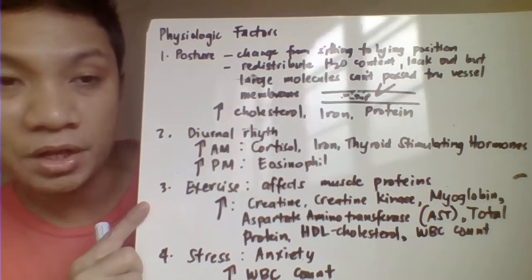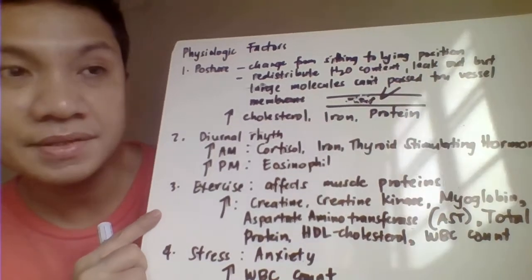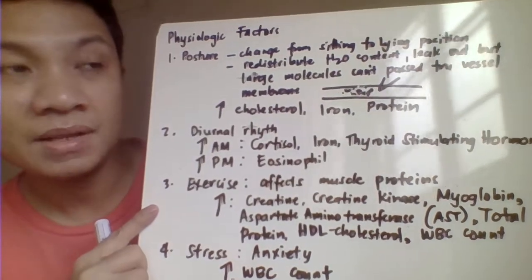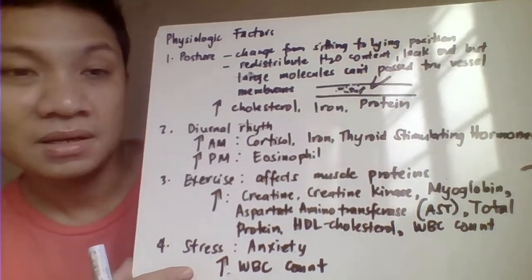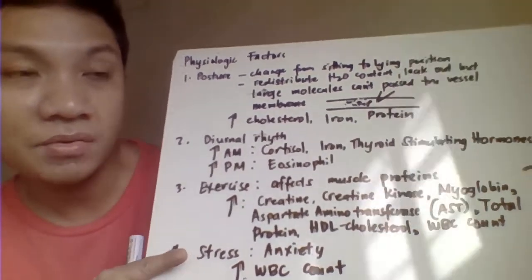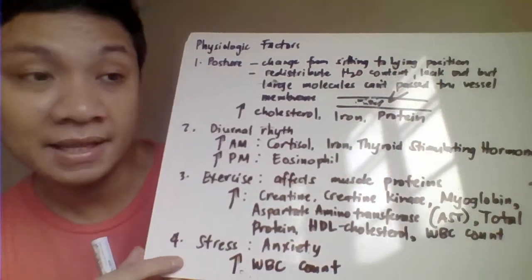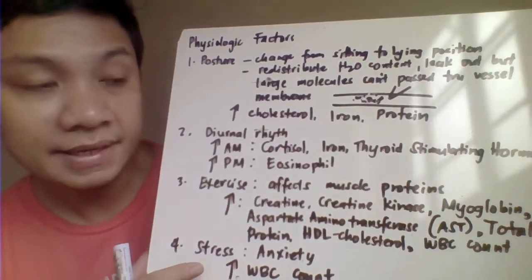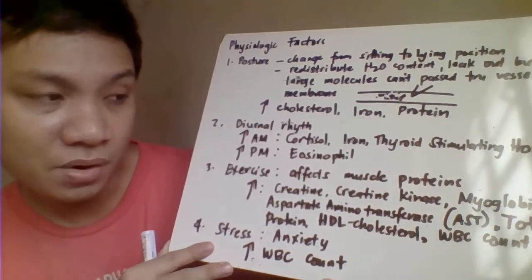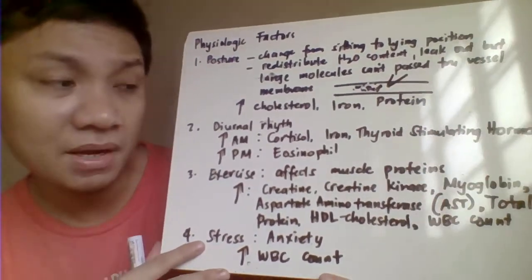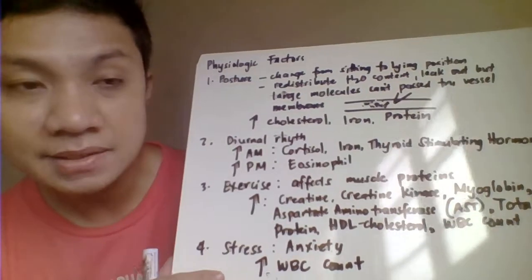Another factor is exercise. Exercise would have a great effect on all your muscle proteins. The effect is highly dependent on the duration and extent of the exercise — whether it is strenuous or light. Most likely it affects all our muscle proteins. Examples of affected analytes include creatinine, creatinine kinase, AST (aspartate aminotransferase), total protein, myoglobin, WBC count, and HDL or high-density lipoprotein cholesterol.